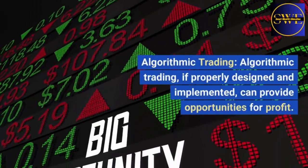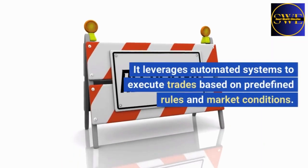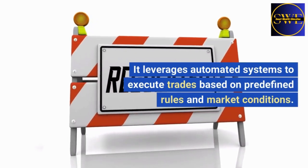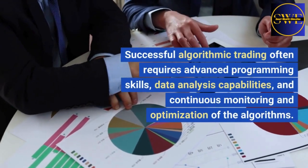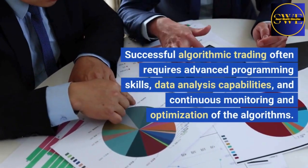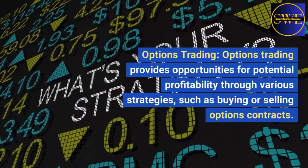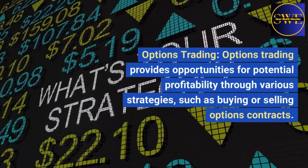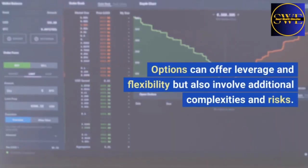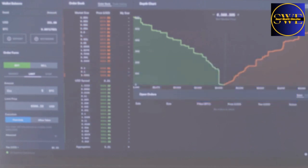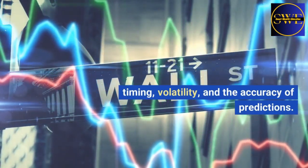Algorithmic trading, if properly designed and implemented, can provide opportunities for profit by leveraging automated systems to execute trades based on predefined rules and market conditions. Successful algorithmic trading often requires advanced programming skills, data analysis capabilities, and continuous monitoring and optimization of the algorithms. Options trading provides opportunities for potential profitability through various strategies such as buying or selling options contracts. Options can offer leverage and flexibility but also involve additional complexities and risks. Profits in options trading can depend on factors like market direction, timing, volatility, and the accuracy of predictions.